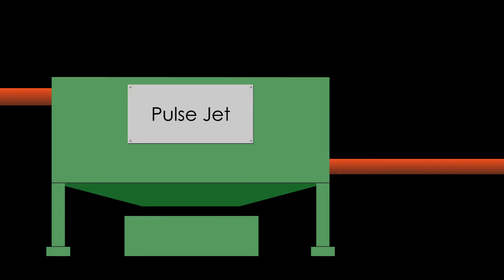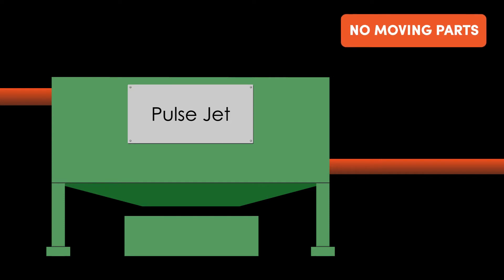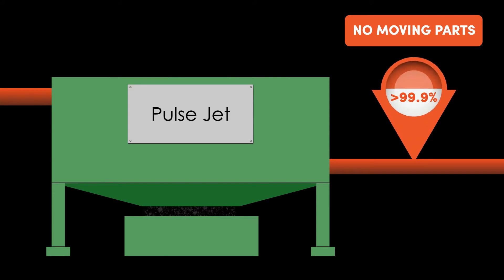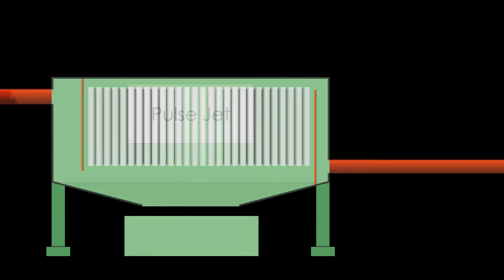These industry workhorses boast no moving parts in their basic configurations and allow collection efficiencies greater than 99.9%. In the PulseJet dust collector, the dusty airstream usually enters from below the bags or filters and is pulled upwards through the filters, where dust is captured on the exterior surface and clean gas passes through to the clean air plenum side or exhaust.